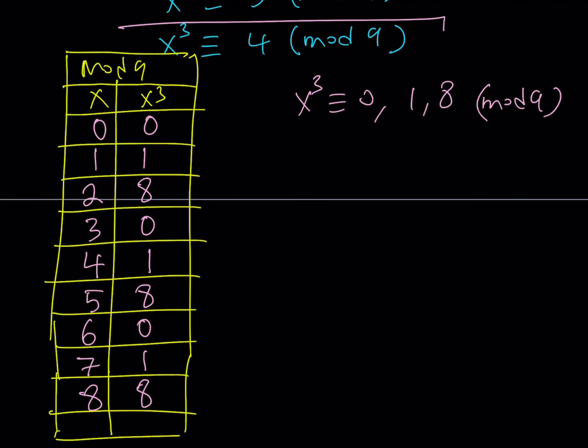Therefore, the congruent statement, x³ is congruent to 4 mod 9, is impossible. An integer cubed cannot be 4 mod 9. It's impossible. Therefore, we don't have any solutions to this equation, as in the first method.